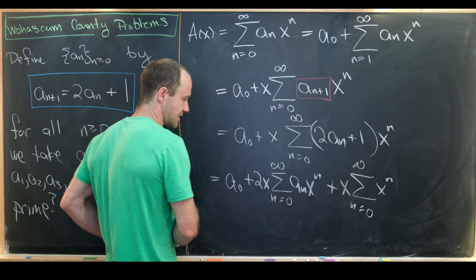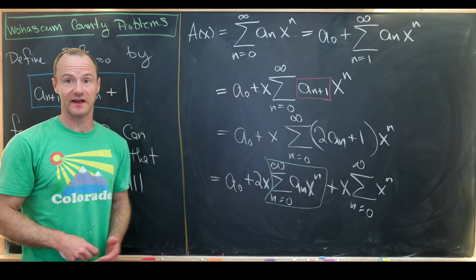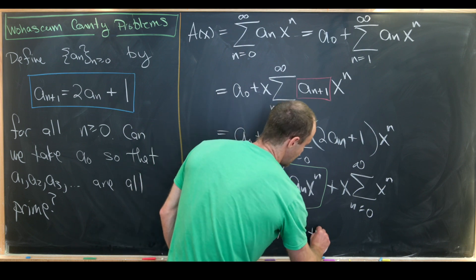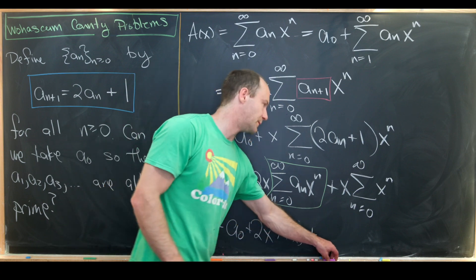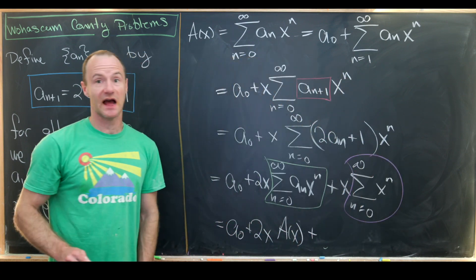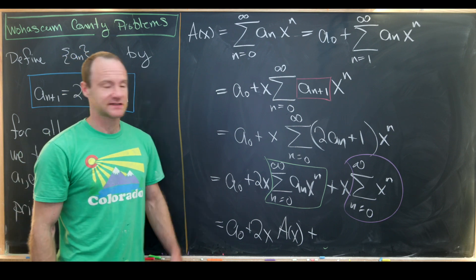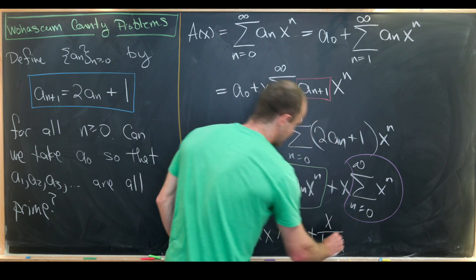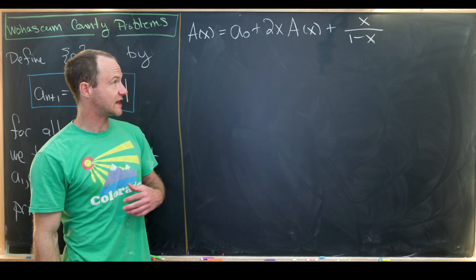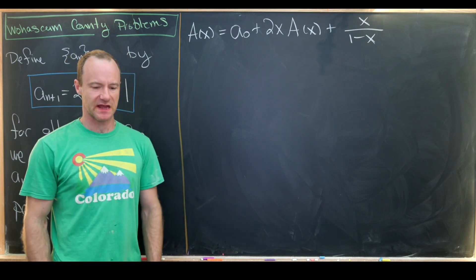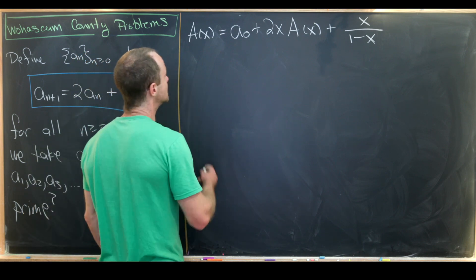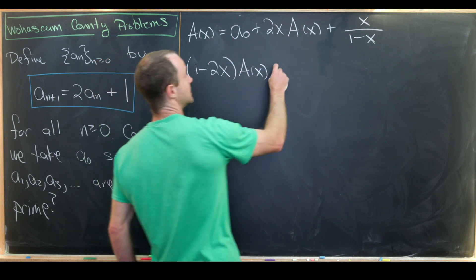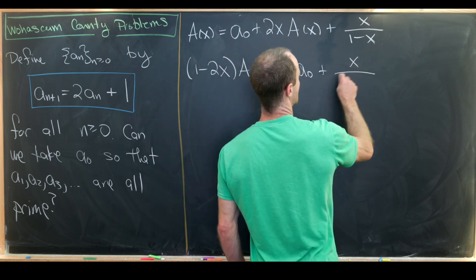The sum of a_n x^n is exactly our generating function a(x). So we can rewrite this as a_0 plus 2x times a(x), plus — and this remaining term is exactly a geometric series with common ratio x, which gives x over (1 - x). Now the strategy is to solve for a(x). We have (1 - 2x) times a(x) equals a_0 plus x over (1 - x).